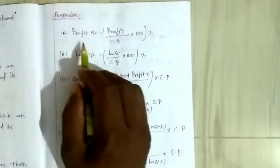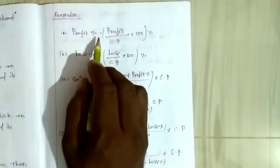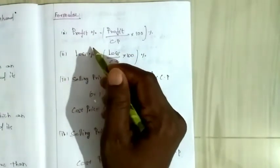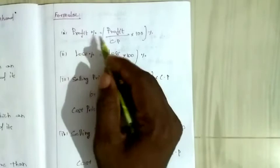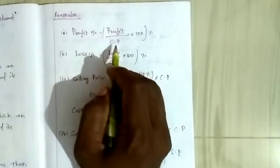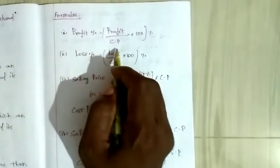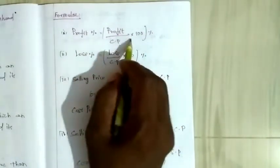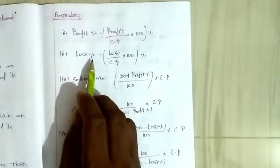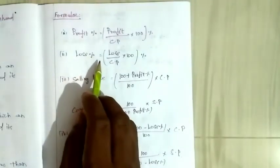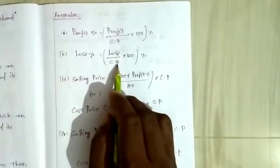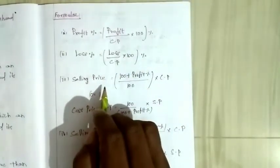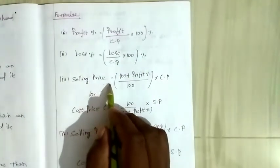Profit percentage formula: Profit percentage = (Profit divided by Cost Price) into 100%. Next, Loss percentage = (Loss divided by CP) into 100%.